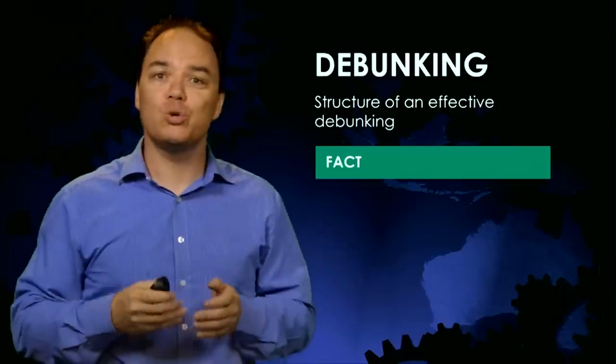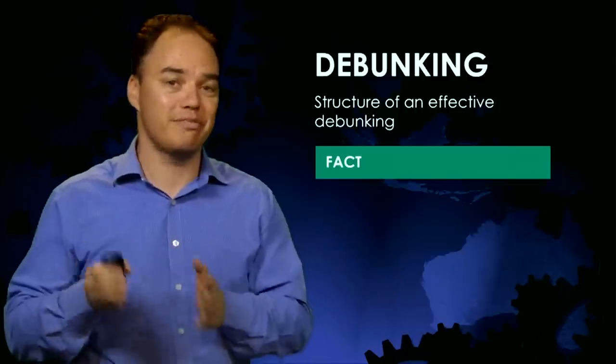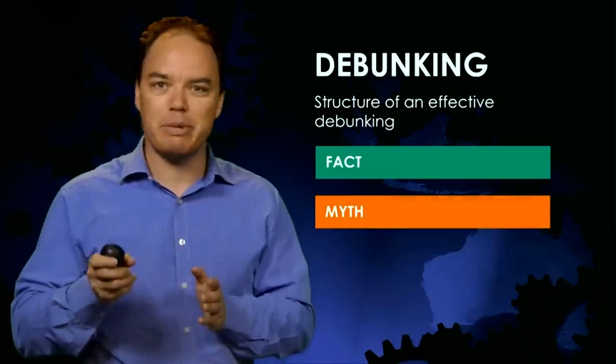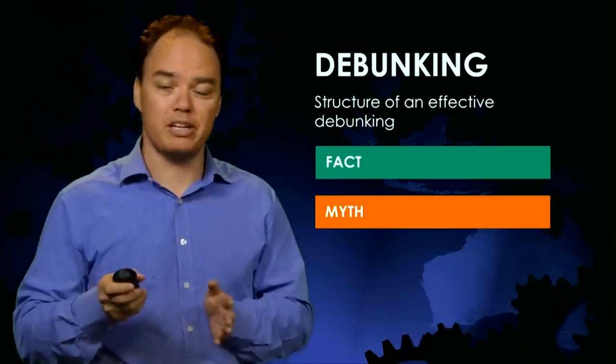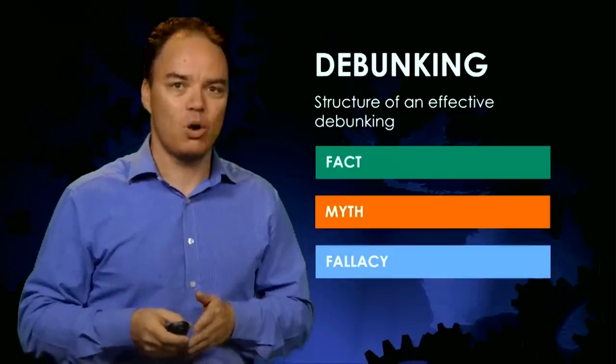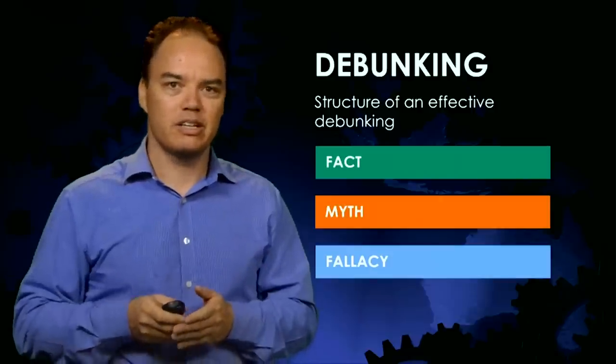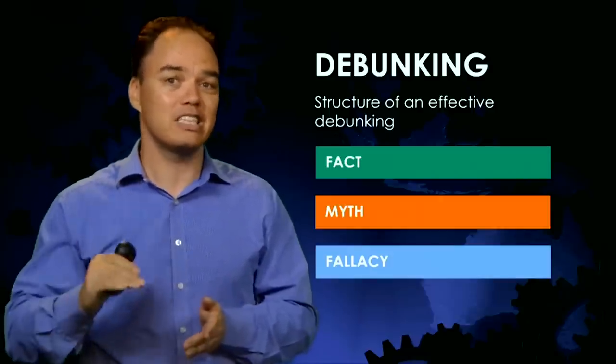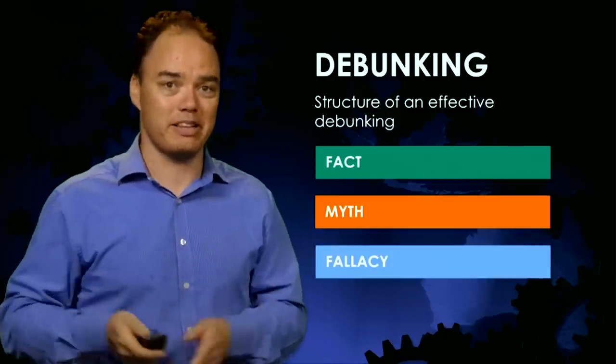So let's bring all this together. An effective debunking requires the following elements: first, a sticky fact — your debunking should emphasise a sticky alternative fact. Second, you do need to specify the myth, but make sure you provide a warning before specifying it. Lastly, explain how the myth distorts the science — what is the technique or fallacy that it uses? The science tells us that the fact-myth-fallacy format is an effective way of debunking myths. As Winston Churchill reminds us, myths can spread quickly, which is why we need to explain how the myths distort the science. This can neutralise misinformation or even make it backfire.